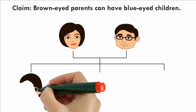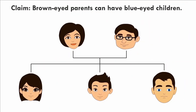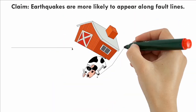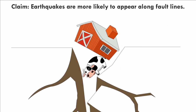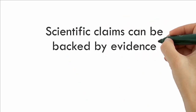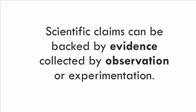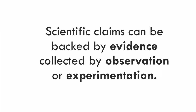Scientists start with making a claim. For example: brown-eye parents can have blue-eye children. Here's another claim: earthquakes are more likely to appear along fault lines. These are all scientific claims that can be backed by evidence collected by observation or experimentation.